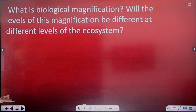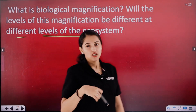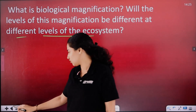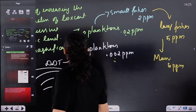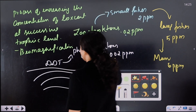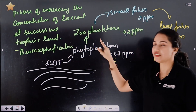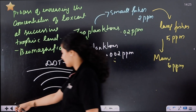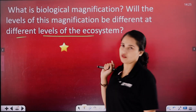What is biological magnification? Will the levels of this magnification be different at different levels of the ecosystem? Yes, it is different at different trophic levels. The concentration is increasing — its amount, its concentration will increase at successive trophic levels.